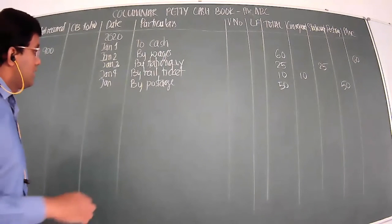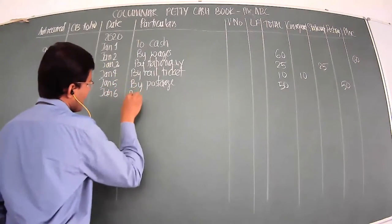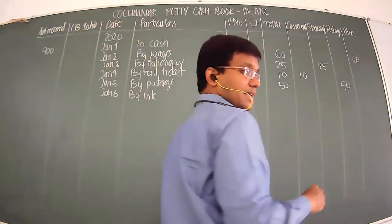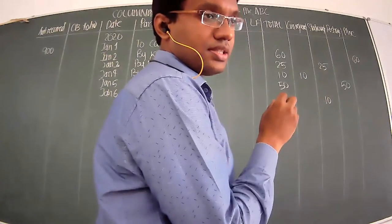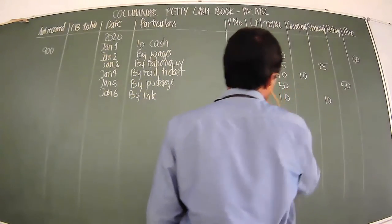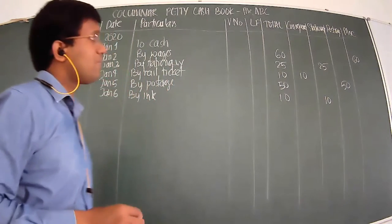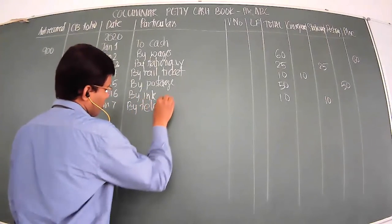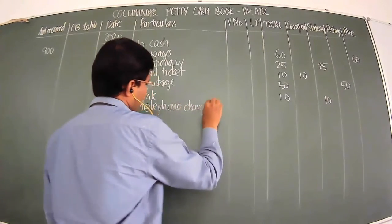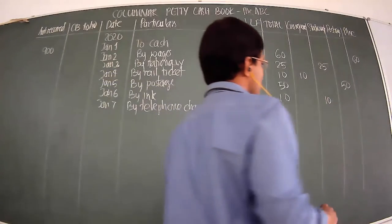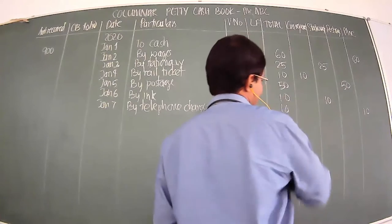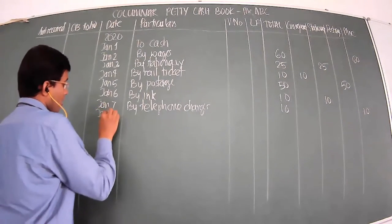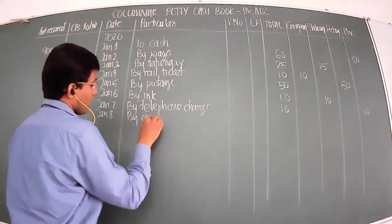January 6th: Ink - ink is stationery, so rupees 10 is recorded under the stationery column, total 10. January 7th: By Telephone Charges - rupees 10. We do not have a corresponding column for telephone, so it goes under miscellaneous at 10, total 10.